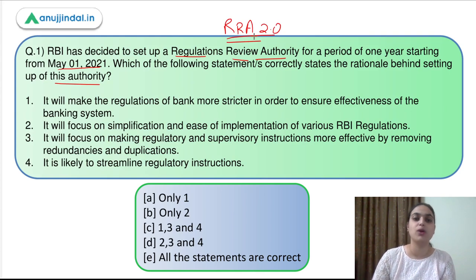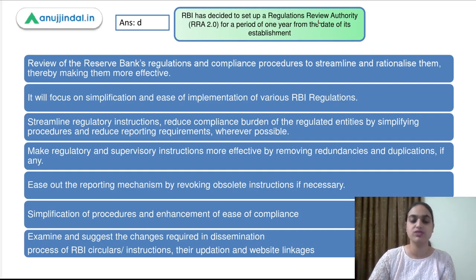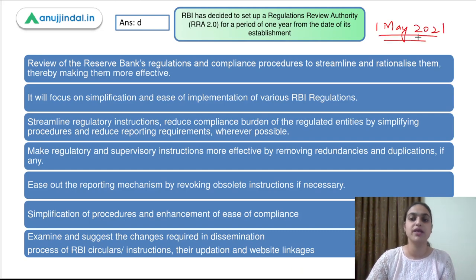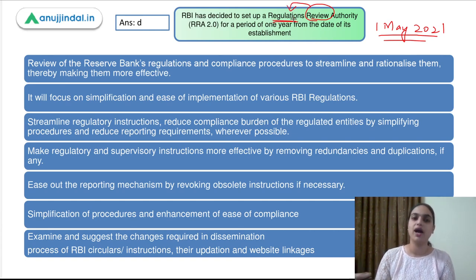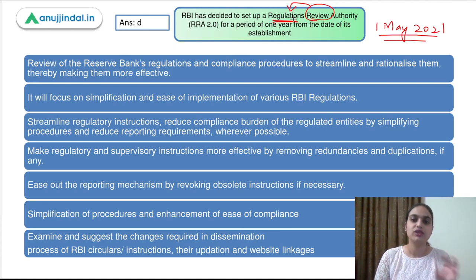Let us first discuss what are some of the major objectives behind setting up of this authority, and then we'll move back to the question. RBI has decided to set up this authority for one year starting from 1st of May 2021. From the very name, it is clear that this authority focuses on reviewing the regulations. RBI regulates our Indian banking system, and has different rules and regulations governing different bodies in our Indian economy. We have to make sure these regulations are properly in place and working efficiently, so this authority has been formed to review the regulations of RBI.